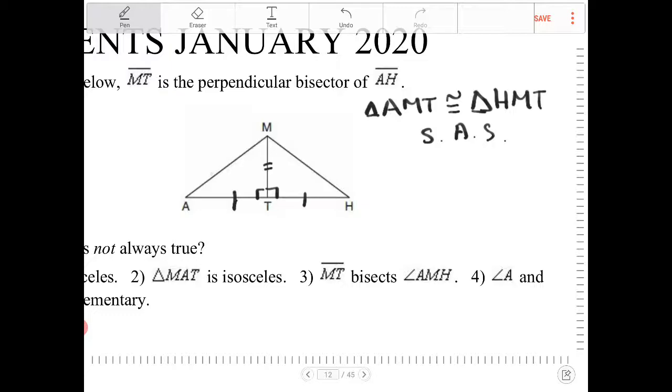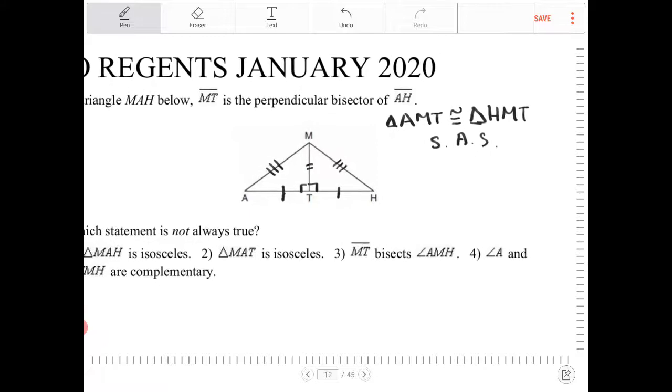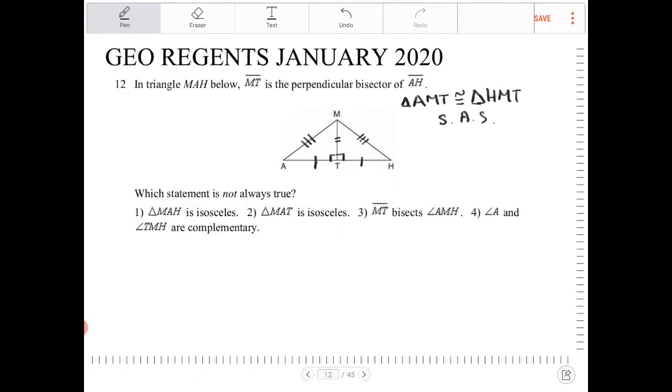And then based on CPCTC, or corresponding parts of congruent triangles are congruent, these two segments are also going to be congruent as a result. So therefore, this triangle AMH, or MAH, however you want to say it, is going to be an isosceles triangle.